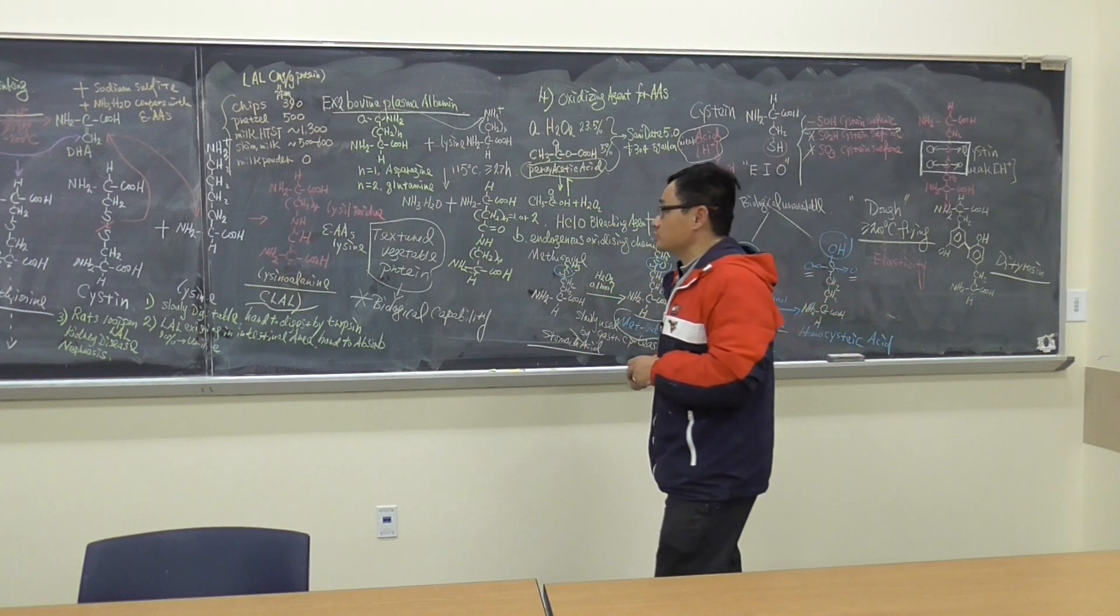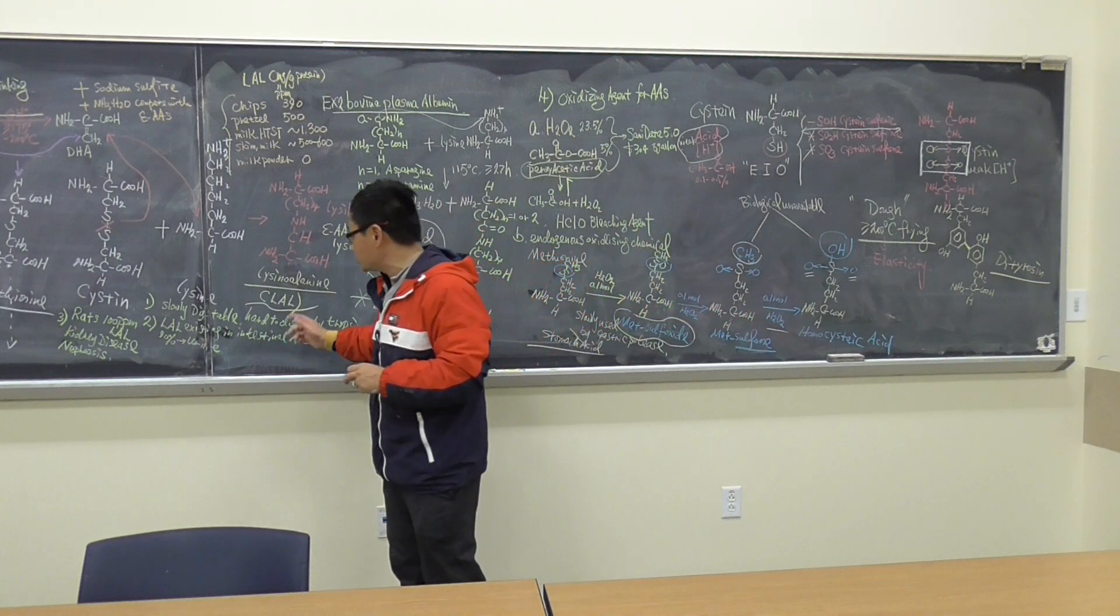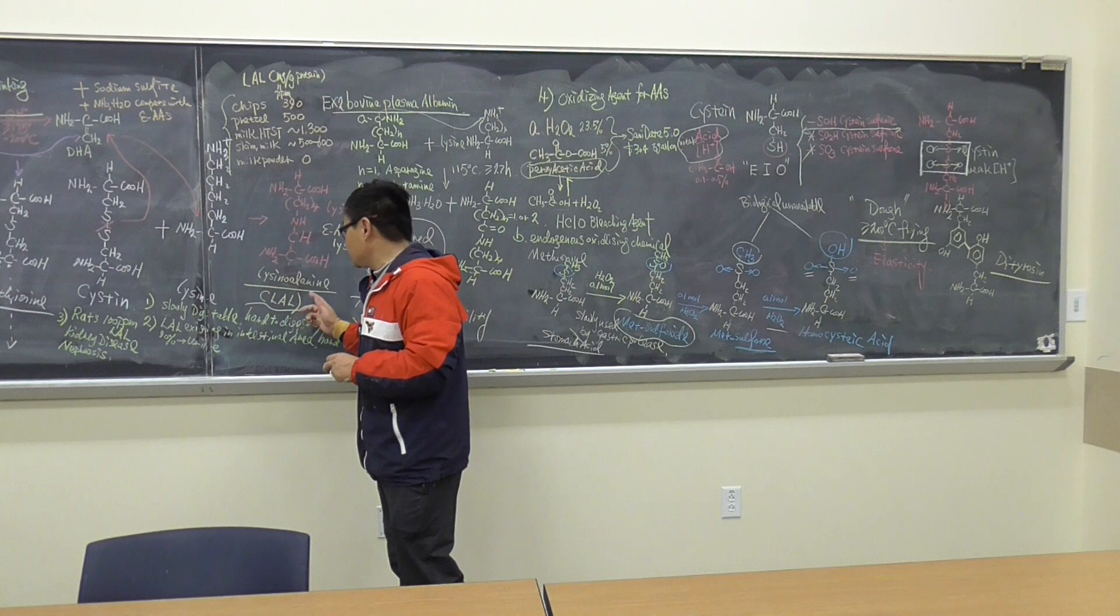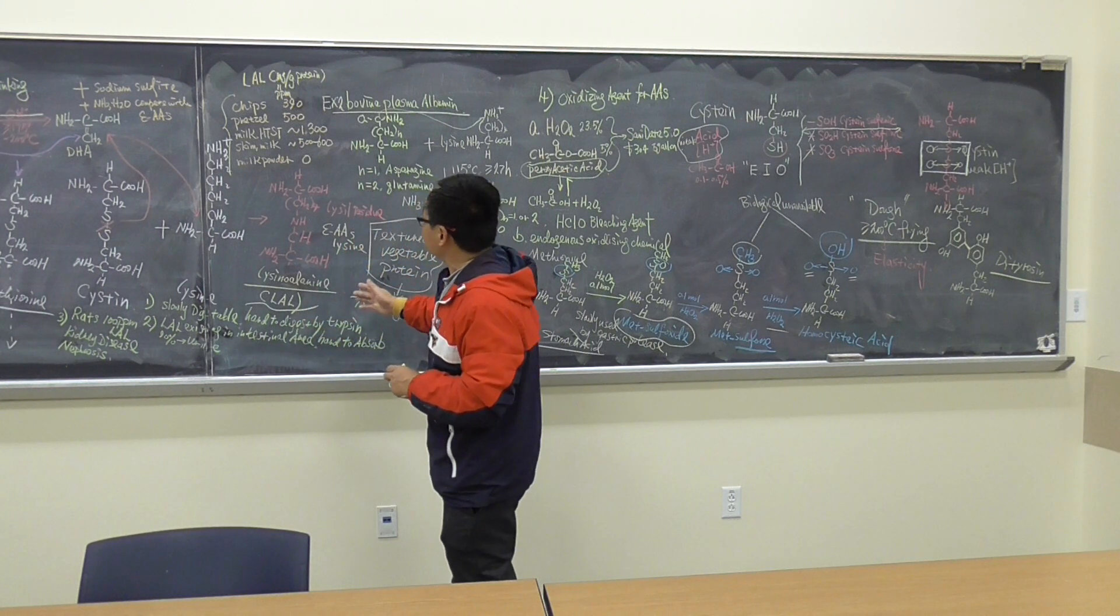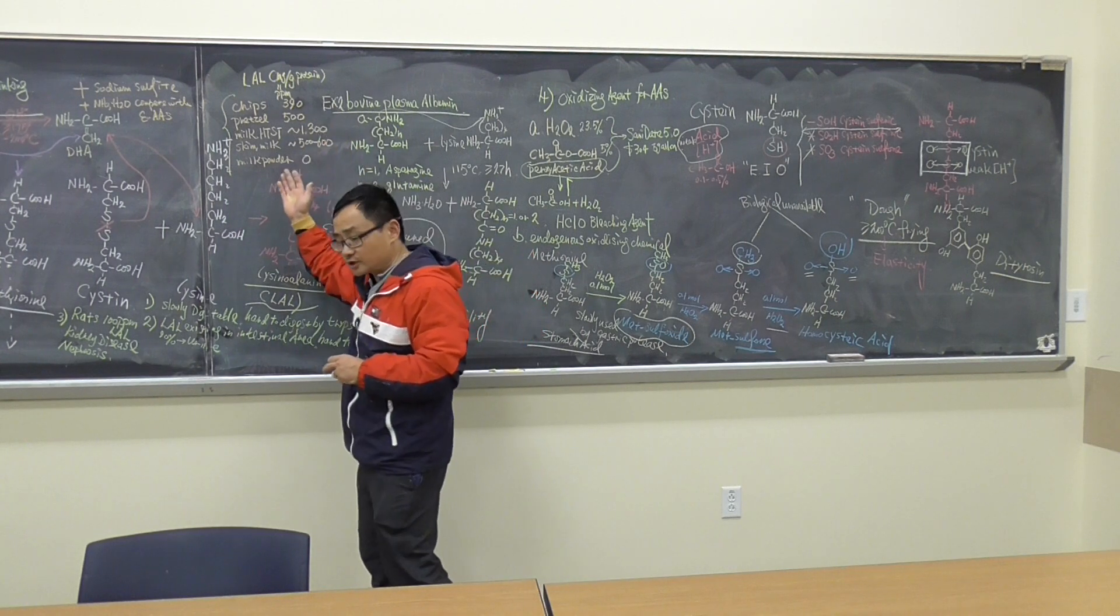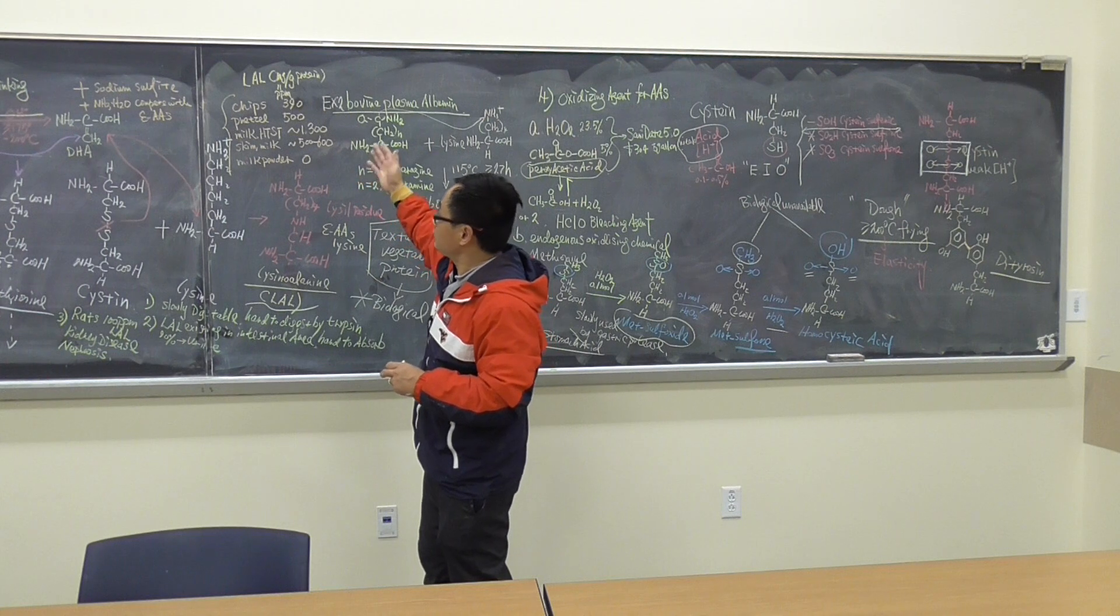The dehydroalanine is not a good product, because they will contribute for the cross-linking. And the cross-linking, especially with epsilon amino acids, like lysine, they will generate lysinoalanine, which is LAL, and we didn't recognize it. This is widely used in lots of products, and the amount is not really minimized. It's huge.